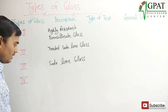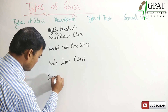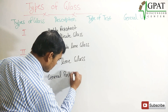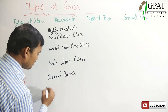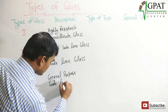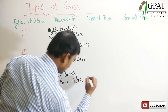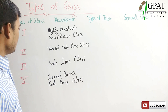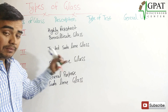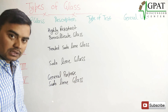The fourth type of glass is general purpose soda lime glass. To recap: Type 1 is highly resistant borosilicate glass, Type 2 is treated soda lime glass, Type 3 is soda lime glass, and Type 4 is general purpose soda lime glass.